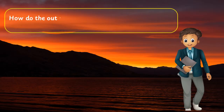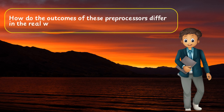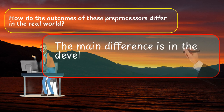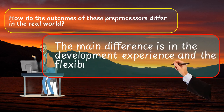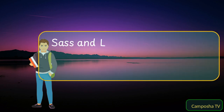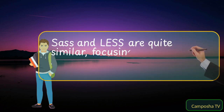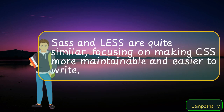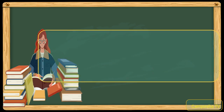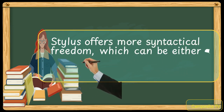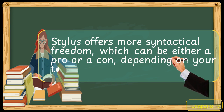I see. How do the outcomes of these preprocessors differ in the real world? The main difference is in the development experience and the flexibility they offer. SASS and LESS are quite similar, focusing on making CSS more maintainable and easier to write. Stylus offers more syntactical freedom, which can be either a pro or a con, depending on your team's preference.